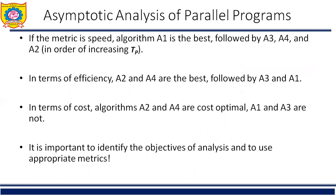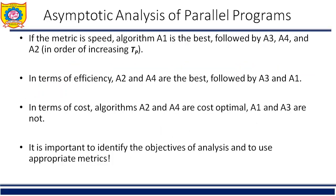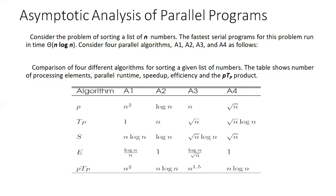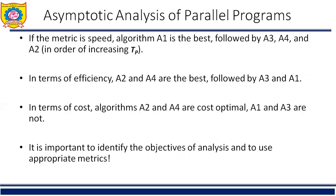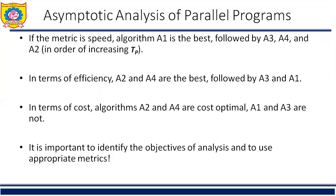If the metric is speed, algorithm A1 is best followed by A3, A4, and A2. In terms of efficiency, A2 and A4 are the best followed by A3 and A1. In terms of cost, that is the p·tp product, A2 and A4 are cost optimal while A1 and A3 are not cost optimal. It is important to identify the objective of the analysis and to use the appropriate metrics.